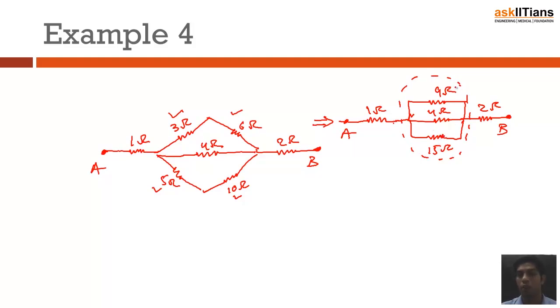Again, if I have a proper look at the equivalent circuit across A and B, 1 is in series with this combination. That is, the combination of 9 ohm, 4 ohm, and 15 ohm, they are in parallel with each other. So if we found the equivalent resistance of this setup, then we just need to add 1 ohm and 2 ohm to the final result of this.